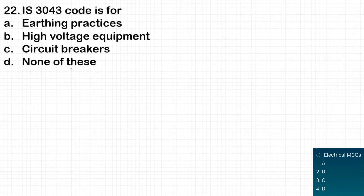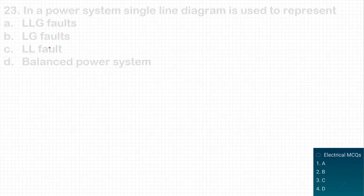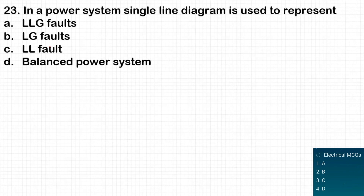The next question: IS 3043 code is for what — earthing practices, high voltage equipment, or circuit breakers? IS 3043 is for earthing practices, so you must remember that. Option A is the correct answer.